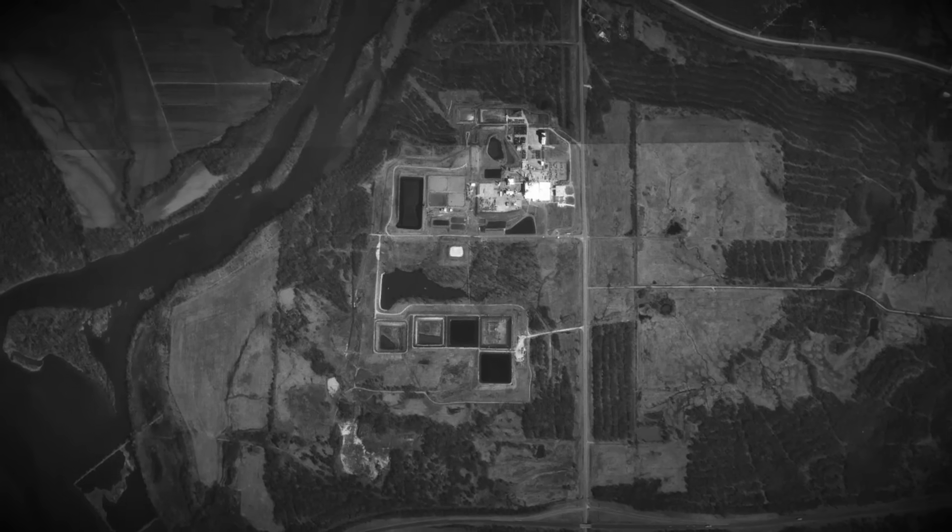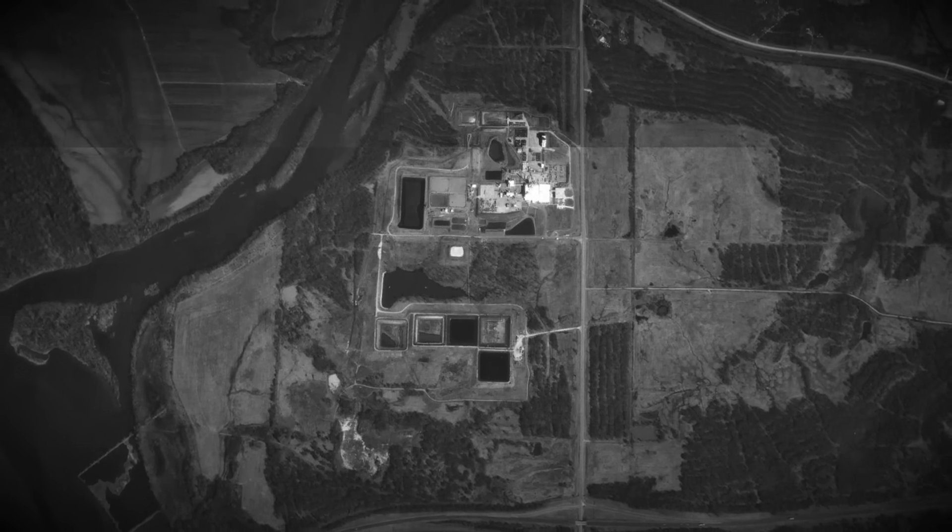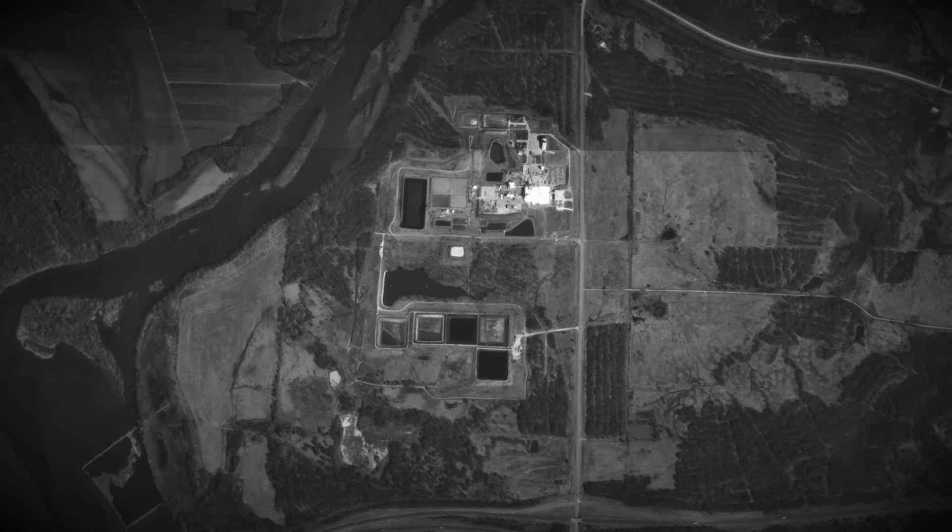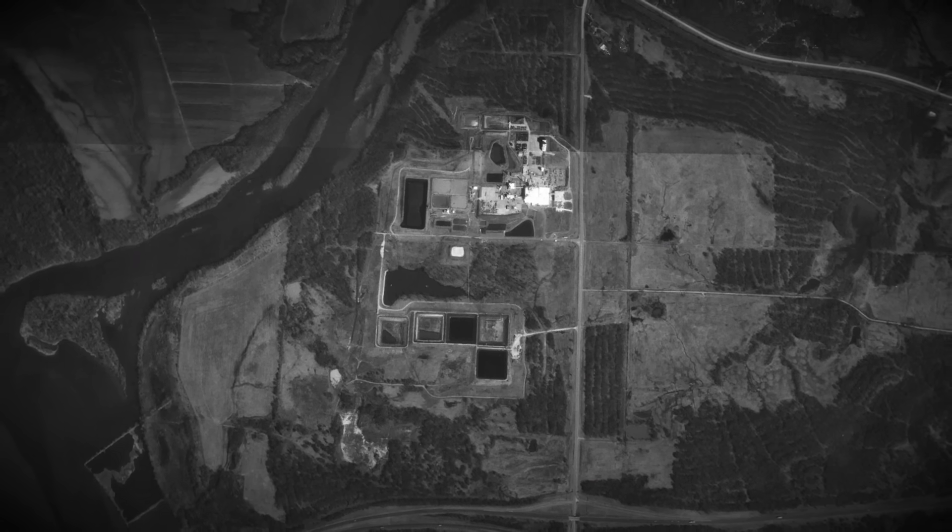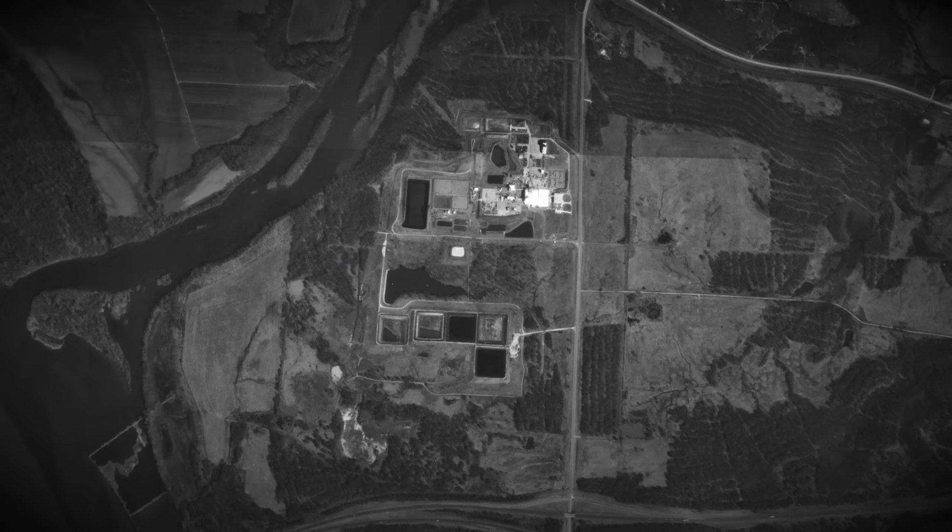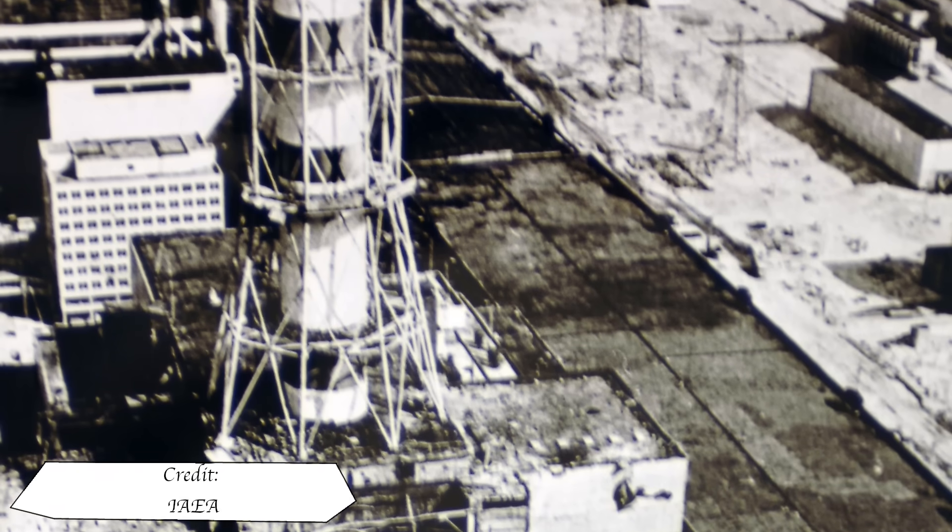The site after cleanup would continue to operate until 1993 but it would see another release in 1992. This coupled with storage ponds leaking into the ground meant that the site would need a long time to be fully decommissioned and cleaned. The incident didn't stir much in the media as you would have thought but luckily a few months later Chernobyl would happen.